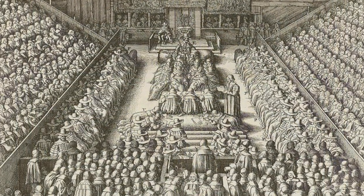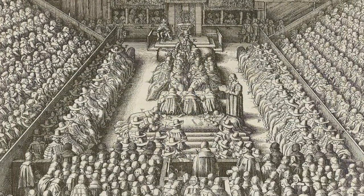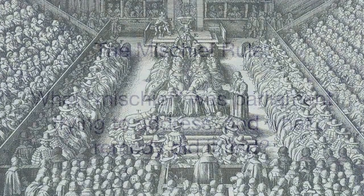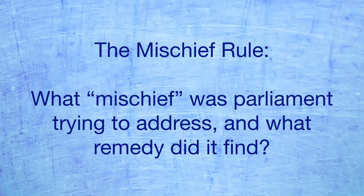The Court, therefore, had to consider the proper way for courts to read and interpret legislation, and it established in this case what is known as the Mischief Rule. The Mischief Rule says that when interpreting a statute, the role of the Court is to try to determine what mischief, or what problem, the Parliament was trying to resolve, and what means the Parliament was trying to use to resolve that problem. The Court should then interpret the statute in a way that assists the Parliament to resolve that problem by its chosen means.